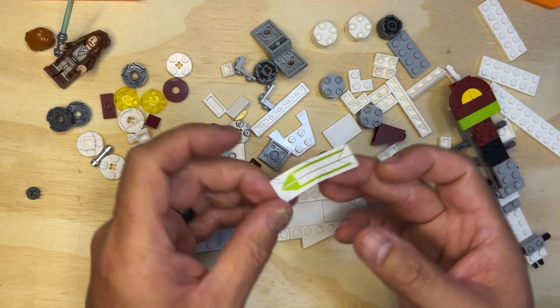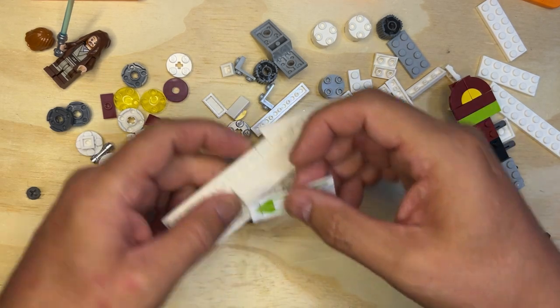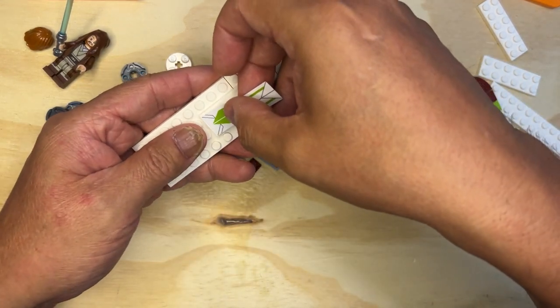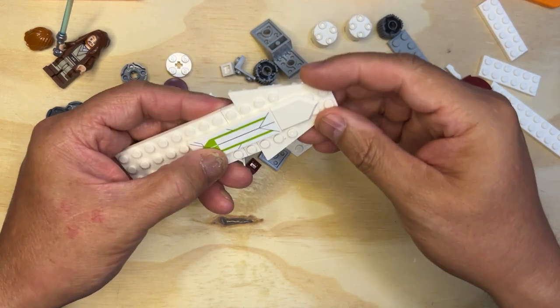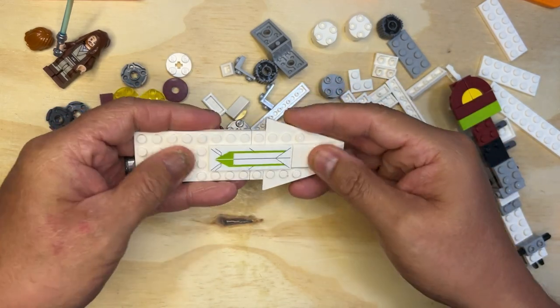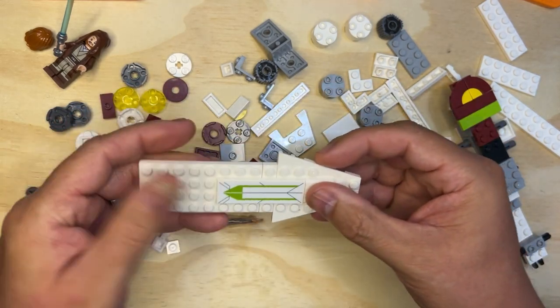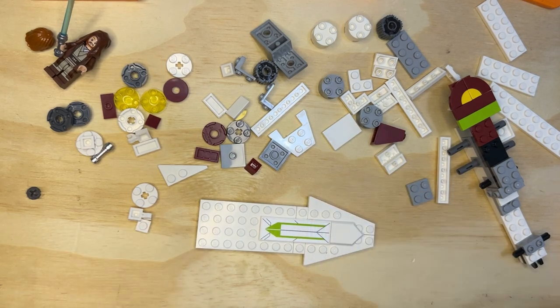Alright, number five. And we're gonna put this on with the green arrow pointing down. I'm trying to line this up as best I can. Yep, as good as it gets. There you go. Alright.